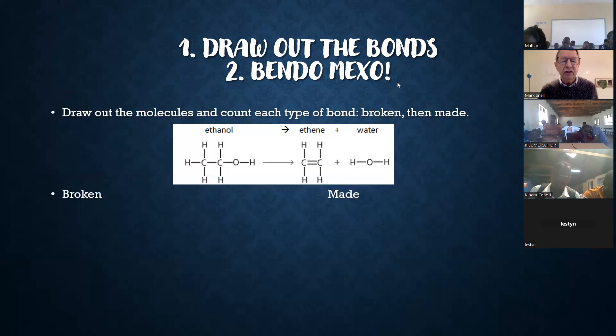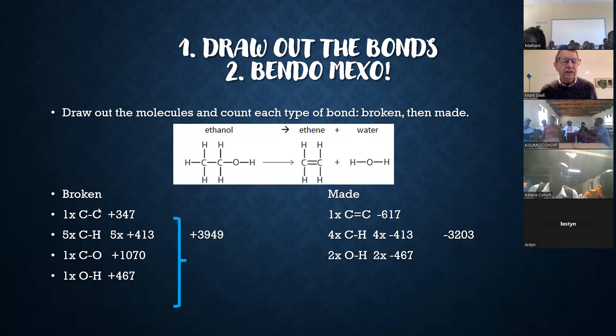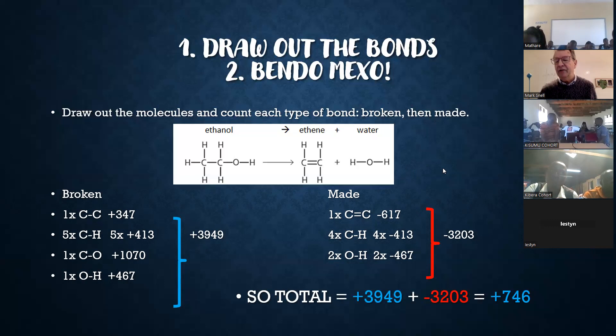What I do next is I work out what I need to break, so I go counting and I get my students to cross them out as they do them: carbon to carbon, carbon-carbon-hydrogen, and so on. Here we are. Here they are, the total of the ones that are broken: five carbon-hydrogens, one carbon, and so on is positive, endothermic, bendo, positive. On the right-hand side, the made are 3203, and therefore we just have to add those up. There we are, positive 746, which is why ethanol does not naturally decompose to form ethene and water.